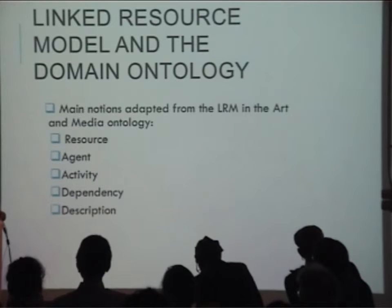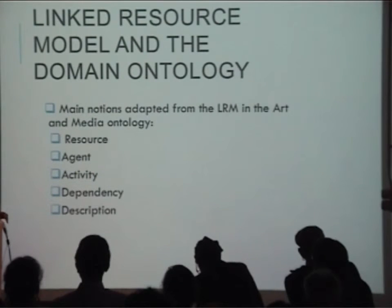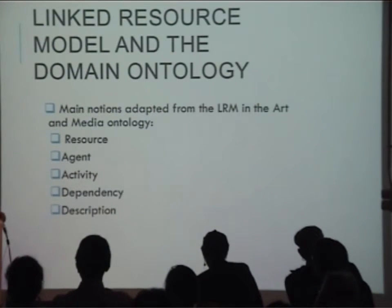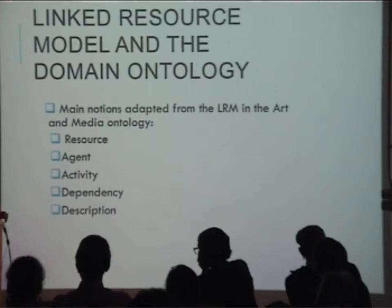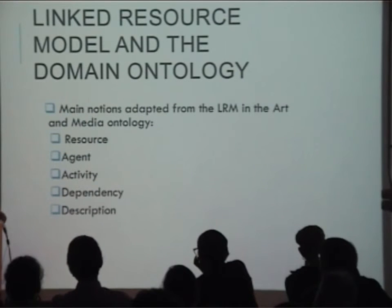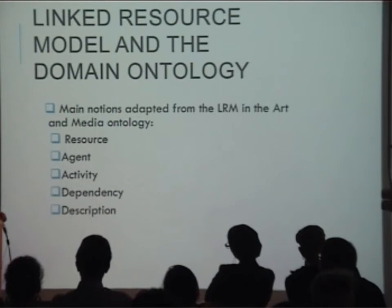The LRM model represents the objects being preserved as resources of three types. An abstract resource is a conceptual representation of an entity, which could be the concept or intention behind an artwork. A concrete resource is the concrete realisation of an abstract resource. An aggregated resource is a resource made up of multiple other resources. Agents are the bearers of change within the model — something that brings change to a resource or participates in an activity. An activity is a temporal entity representing an event, which can be extended to represent different types of event. Dependencies are the association, relation, or interaction among two or more resources, while a description gives information about a resource, such as what it is or why it exists.